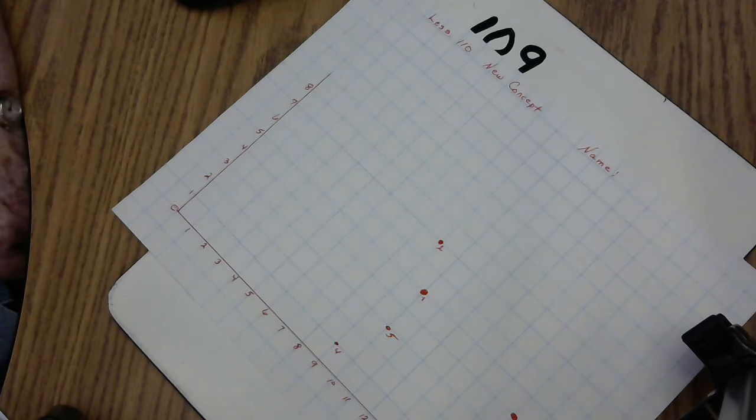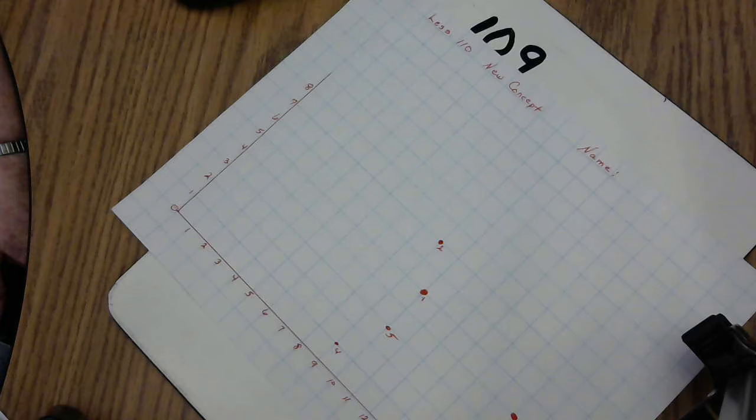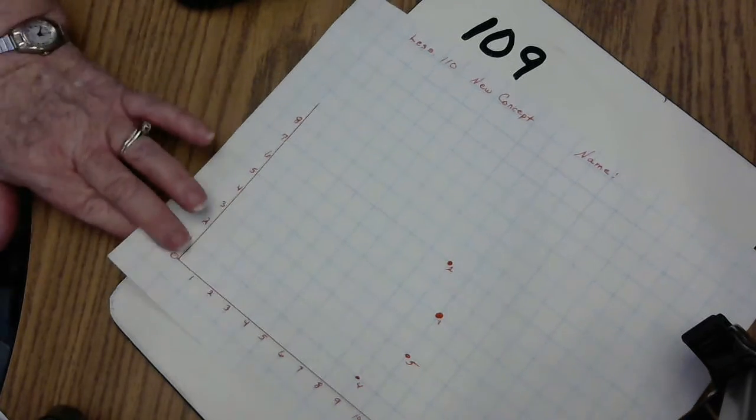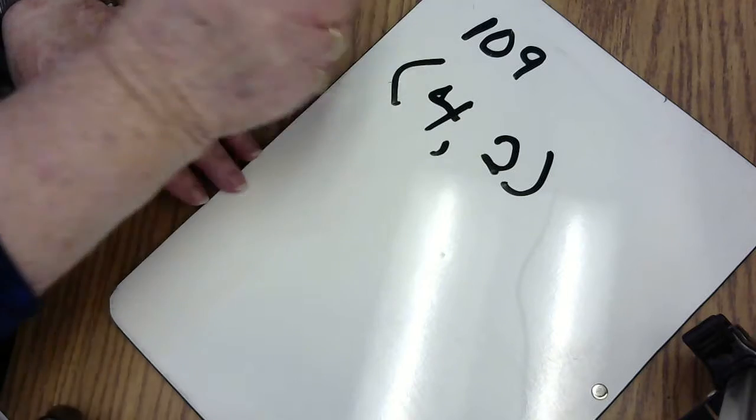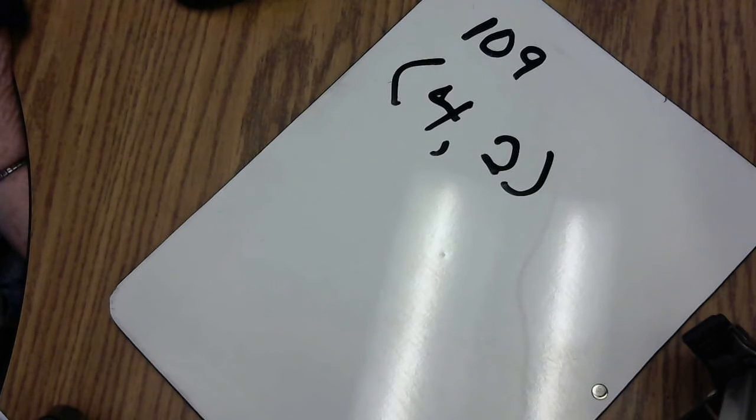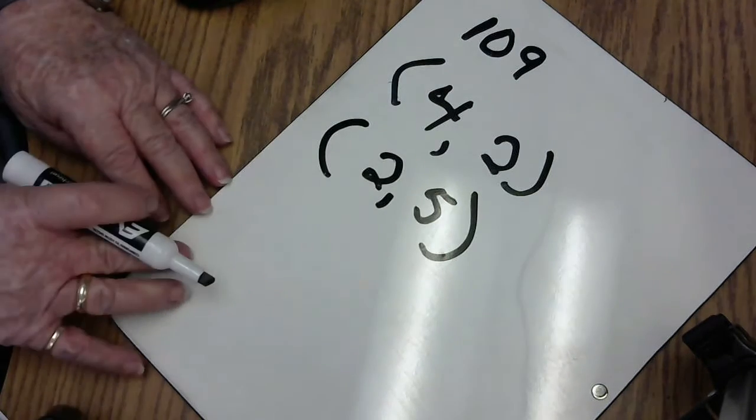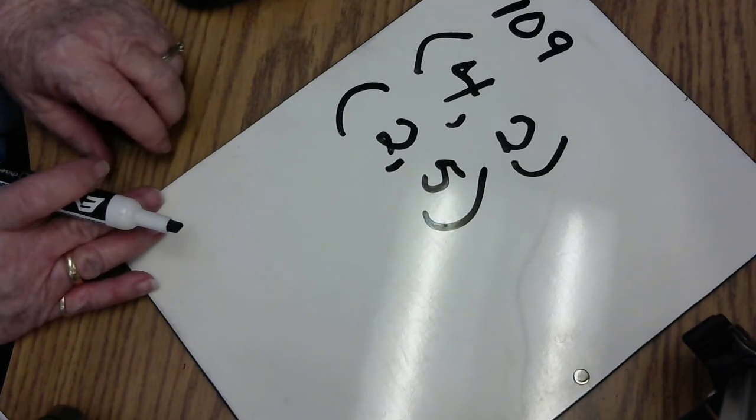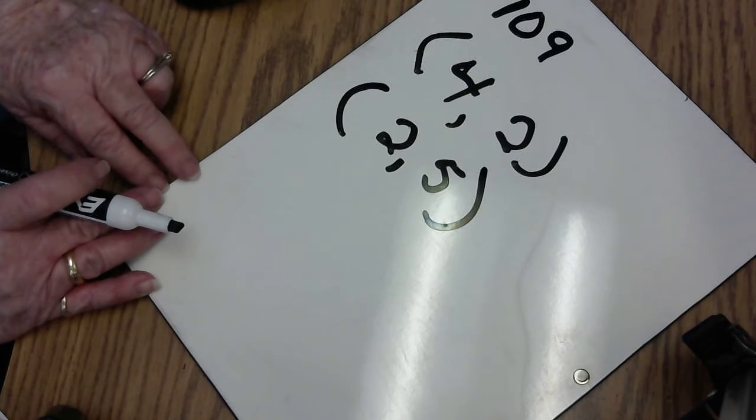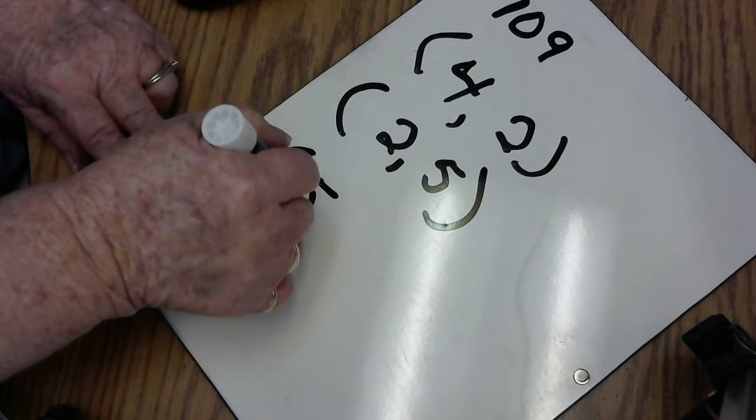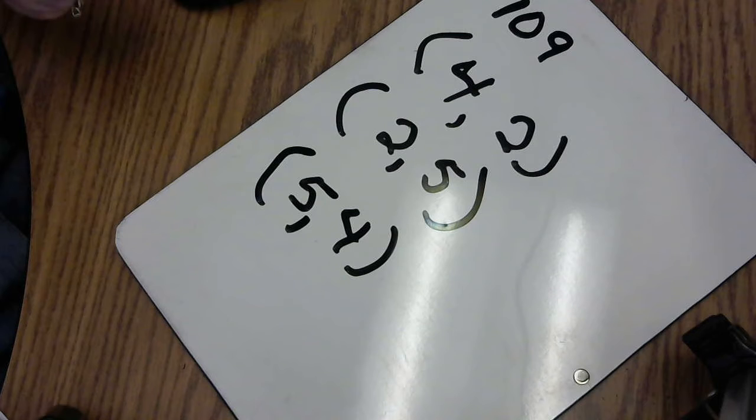Let's look at example number 1. It says write the coordinates of A, B, and C on this grid. If we look at A, it goes over 4 places and then up 2 places, so in parentheses we would write (4,2). If you look at the next one, B, it went over 2 places and then up 5, so our coordinate would be (2,5). And the other one was C, and they went over 5 places and then up 4, so it would be (5,4). And this always has to be in parentheses.